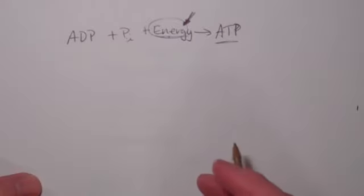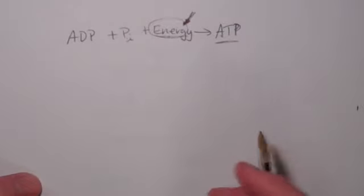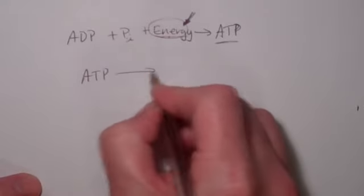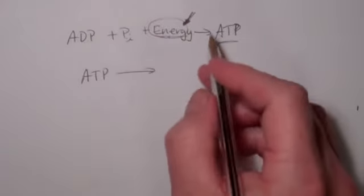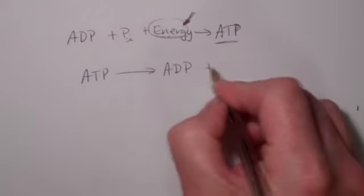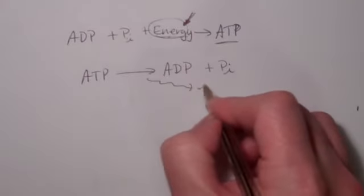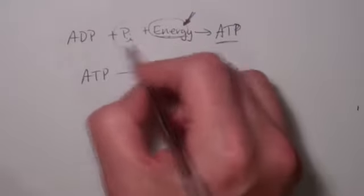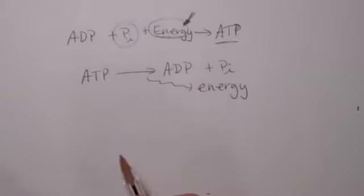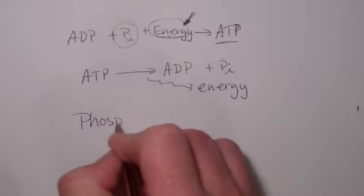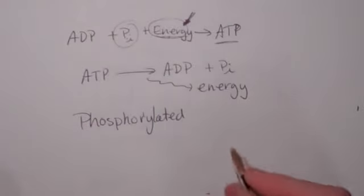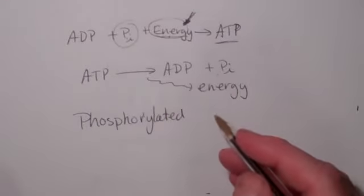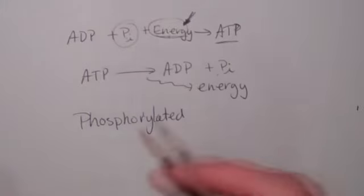When the cell needs to use that energy to do work, to do some function, whether that's to build glucose or to tear apart a molecule, it's going to take that ATP. It's the reverse reaction. ATP is going to give us adenosine diphosphate and inorganic phosphate with energy being released. That energy would be used to build a molecule. When a molecule has a phosphate added to it, we say that molecule has been phosphorylated. When a molecule has a phosphate removed, we say it's been dephosphorylated.